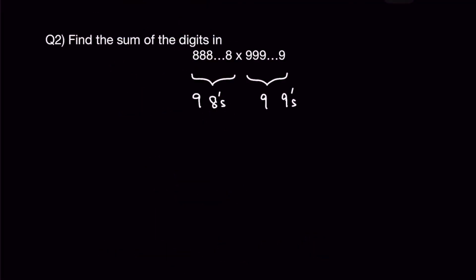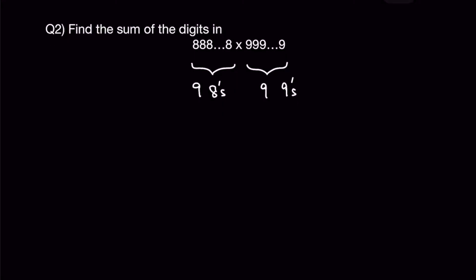Let's move on to question 2. Question 2 asks to find the sum of digits in 98 times 99. It would be impossible, or at least take a very long time, to calculate by direct working. So what we want to do is to figure out a pattern.